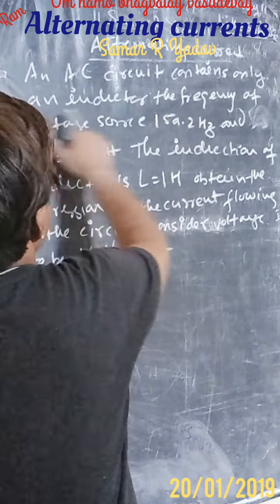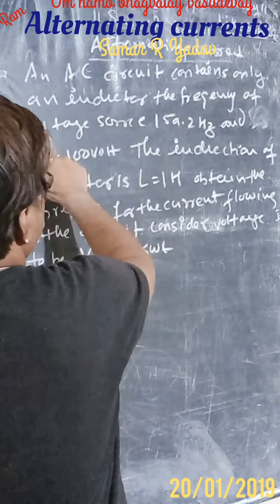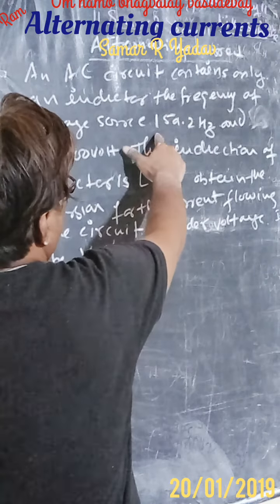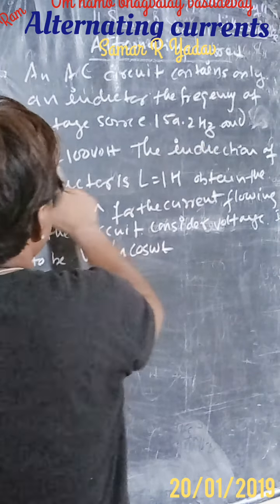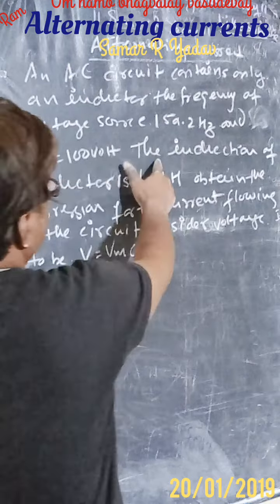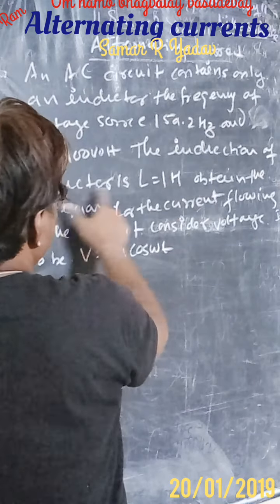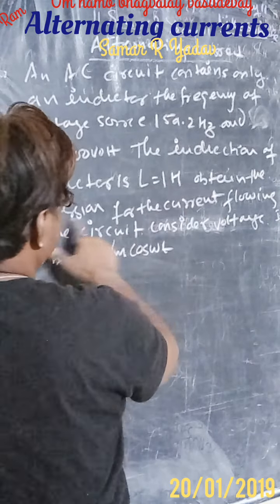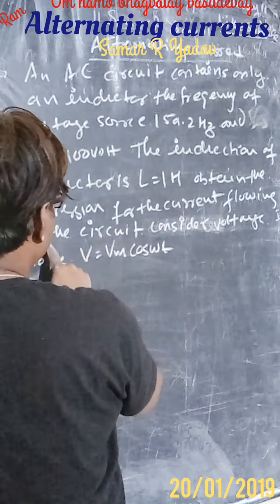An AC circuit contains only an inductor. The frequency of the voltage source is 159.2 Hertz and Vm equals 100 volts. The induction of the inductor is 1 Henry. Obtain the expression for the current flowing in the circuit.